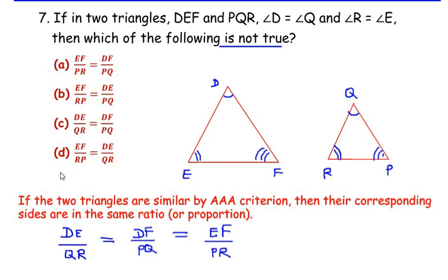Now we have to choose from the options which is not true. Let us start with the first one: EF/PR = DF/PQ. Here we can see EF/PR equals DF/PQ, so this is the correct option or this is true. Let us look at option B: